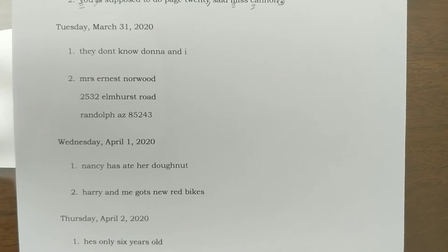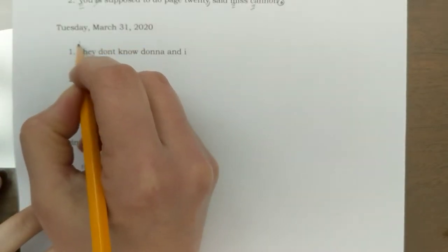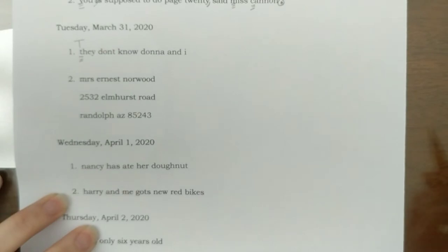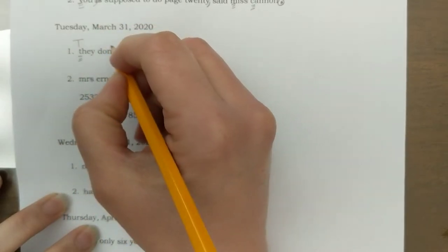Number one, they don't know Donna and I. First of all, we're going to start with a capital at the beginning of our sentence. Second, I see that don't is combining do and not. It's a contraction, so it needs an apostrophe.